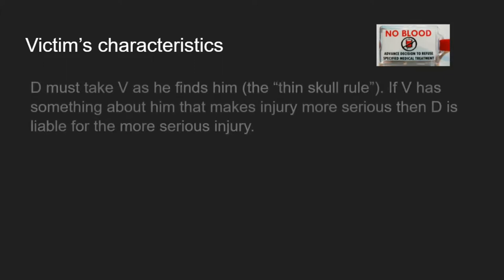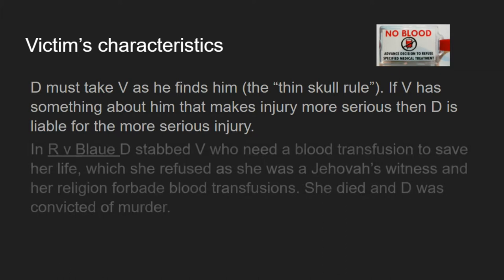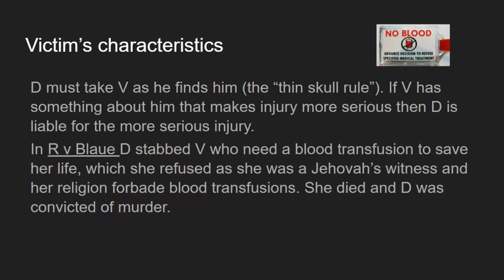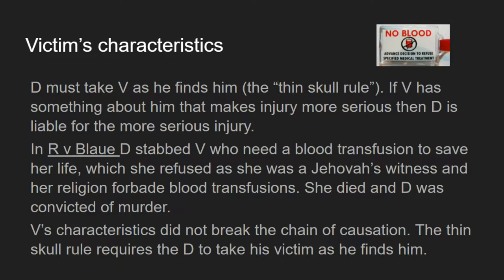Returning to the victim's characteristics and the thin skull rule: this is never going to break the chain of causation. If the victim has something about them that makes their injury more serious, the defendant will be liable for the more serious injury. Case authority for that is R v Blaue, where the defendant stabbed the victim who needed a blood transfusion to save her life. She refused because she was a Jehovah's Witness and her religion forbade blood transfusions, so she died. The defendant was convicted of murder as he had to take the victim as he found them and couldn't escape liability by saying her refusal of a blood transfusion was the cause of death.